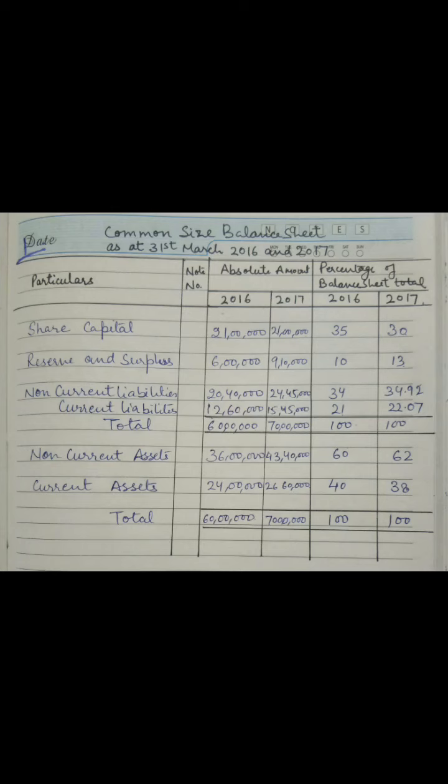For non-current assets, we divide 36 lakhs by 60 lakhs into 100, which comes to 60 percent. For 2017, 43 lakhs 40 thousand divided by 70 lakhs into 100 gives 62 percent. For current assets in 2016, 24 lakhs divided by 60 lakhs into 100 gives 40 percent, and for 2017, 26 lakhs 60 thousand divided by 70 lakhs into 100 gives 38 percent.